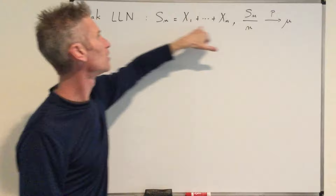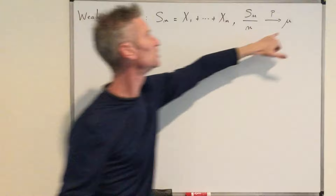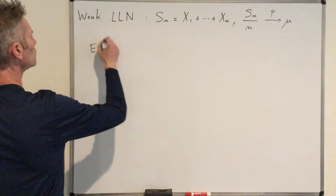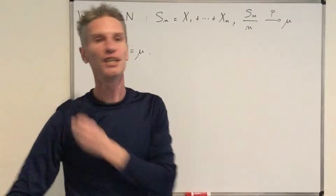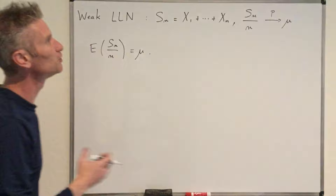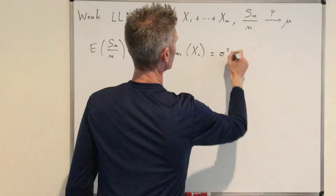Step one is to observe that the expected value of Sn over n is equal to mu. Sn is the sum of the first n random variables, and by linearity of the expected value, the expected value of the sum equals n times the common expected value mu. Dividing by n gives n·mu divided by n, which equals mu. So indeed, the expected value of Sn over n equals mu. To find a good bound in Chebyshev's inequality, we also compute the variance. We assume the variance of each Xi is sigma squared, and sigma squared is finite.